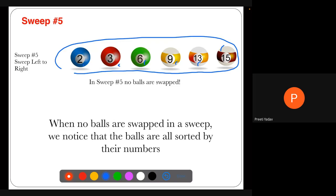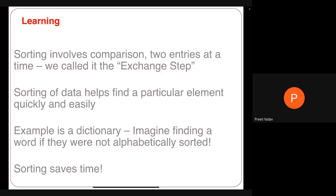Sorting involves comparing two entities at a time — this is called an exchange or swap step. The smaller element goes to the left, the larger to the right. Sorting helps us organize data, and you can give the example of a dictionary — without alphabetical sorting, it would be very difficult to find any word. Sorting saves us crucial time.